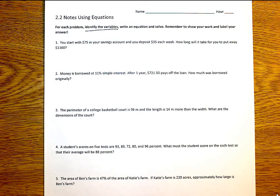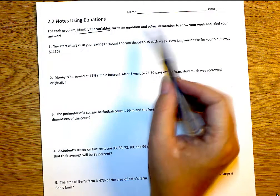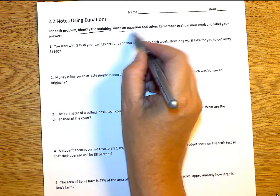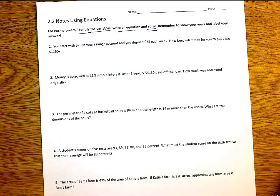So, when you are doing 2.2, make sure you identify the variables, and then you write an equation, and then you solve. Make sure you are doing those three steps, especially when you take your test on Tuesday. Alright, so, the first one, it says,